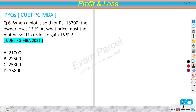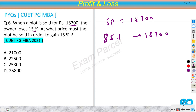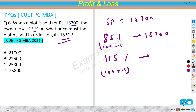The next question is from 2021: when a plot is sold for rupees 18,700, the owner loses 15%. At what price must the plot be sold in order to gain 15%? So the given selling price corresponds to (100 − 15)% = 85% of cost price, and we need to find the value at (100 + 15)% = 115% of cost price.